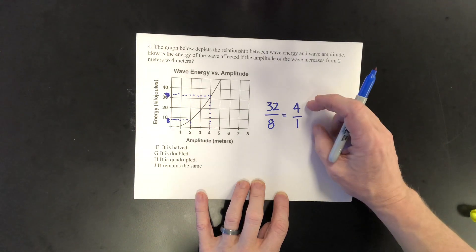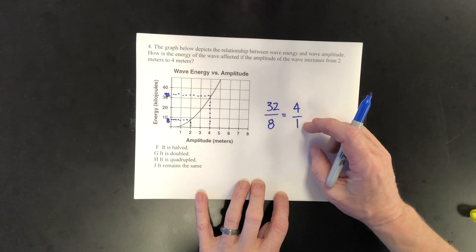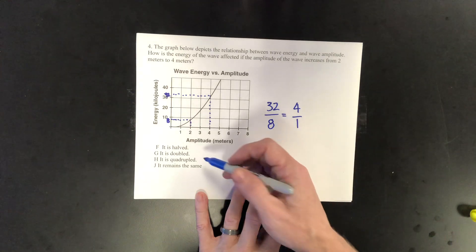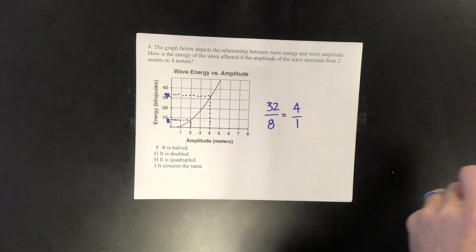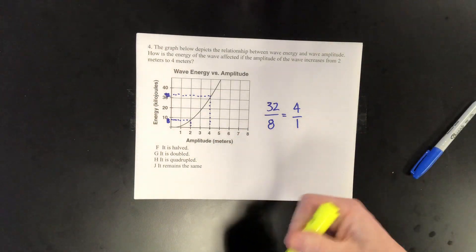So at 4 meters the energy is going to be 4 times greater than it was at 2 meters. So our answer is letter H, the energy is quadrupled.